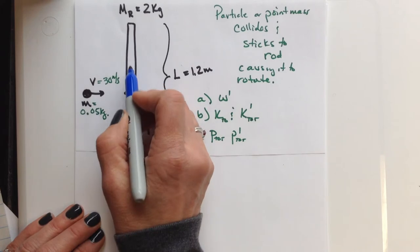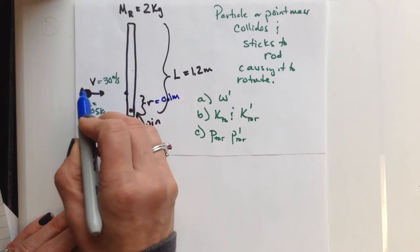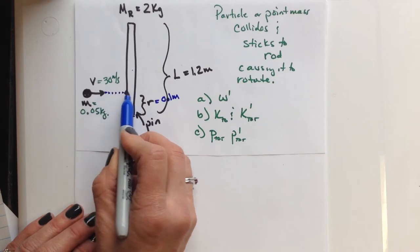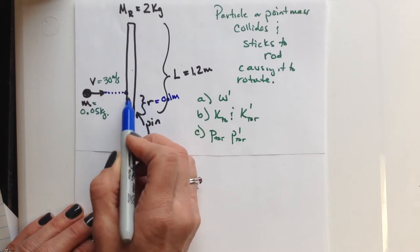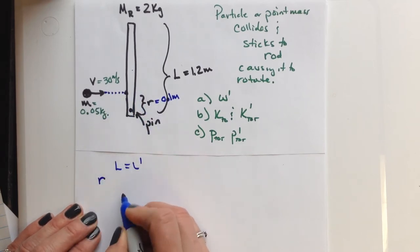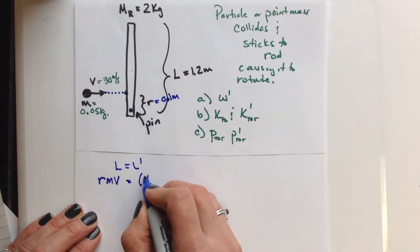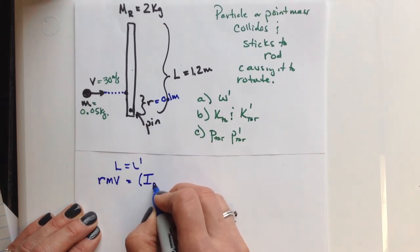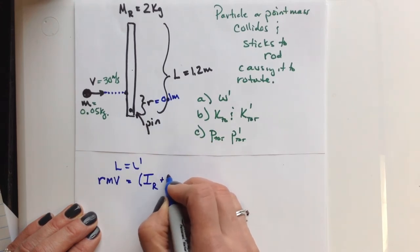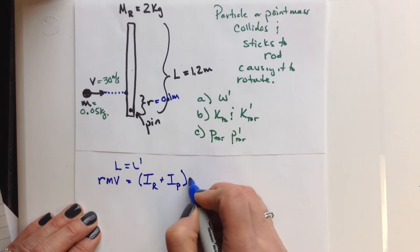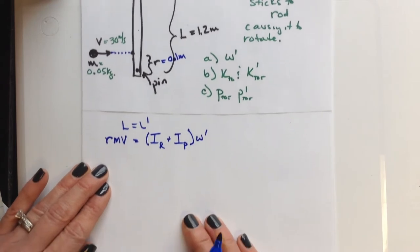So our before, this isn't rotating, so it has 0 angular momentum. Our only angular momentum is relative to the pin. If I extend that line of action, this is my perpendicular distance. It's just going to be r times the mass of it times its velocity is going to be equal to, if they're colliding and sticking together, it's just going to be the rotational inertia of the rod itself plus the rotational inertia of that little point mass or particle times the final angular velocity.